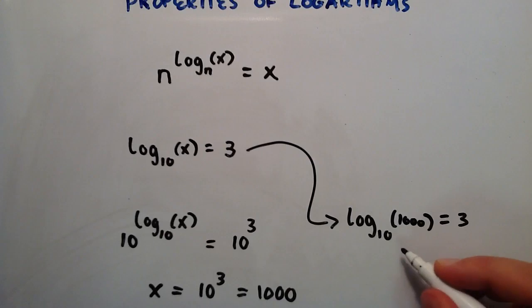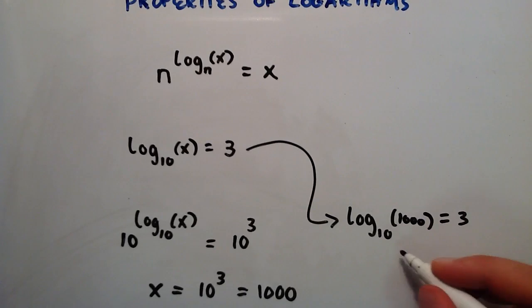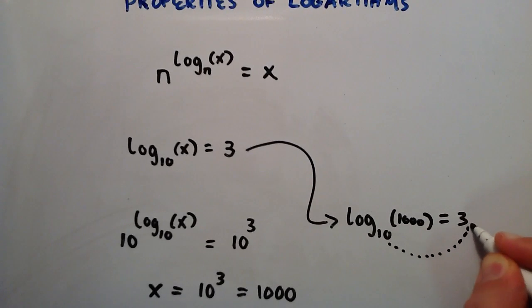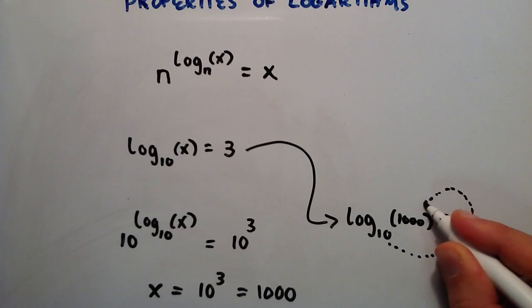we're basically saying that log base 10 of x equals 3 and we said that x equals 1,000. And if you remember from lesson one, the way to look at this is we say, okay, 10 raised to the third power equals 1,000.